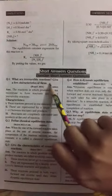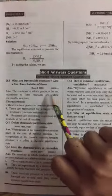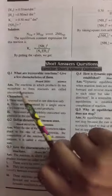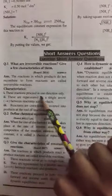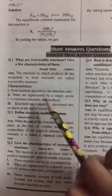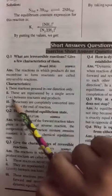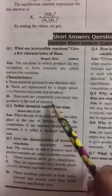Short Question No. 1 What are irreversible reactions? Give a few characteristics of them. The reactions in which products do not recombine to form reactants are called irreversible reactions. Characteristics: 1. These reactions proceed in one direction only. 2. These are represented by a single arrow between reactants and products. 3. Reactions are completely converted into products at the end of the reaction.